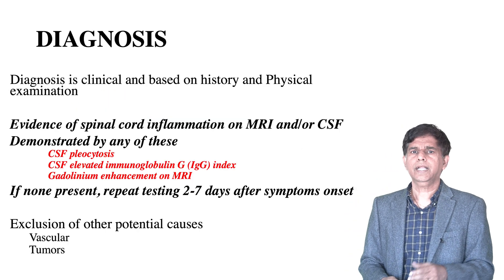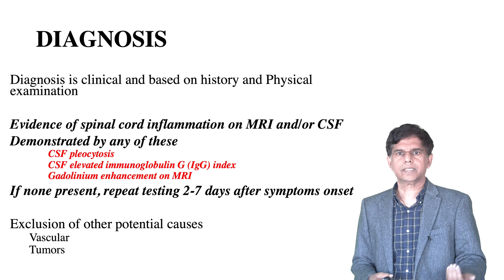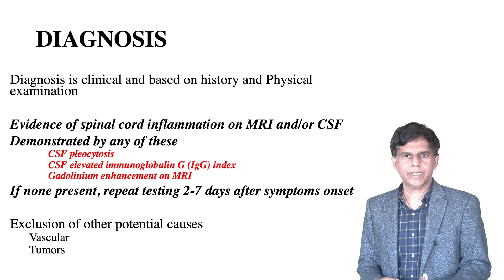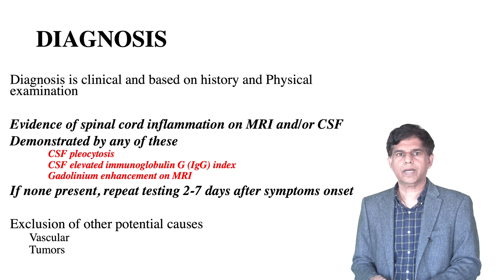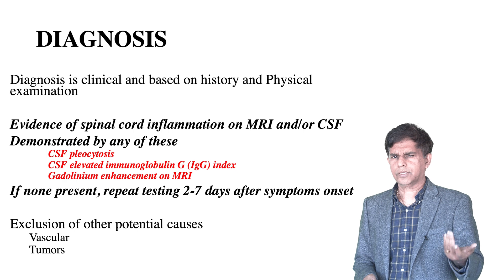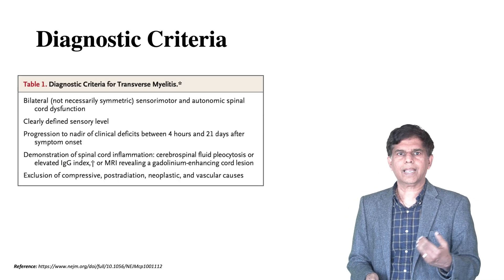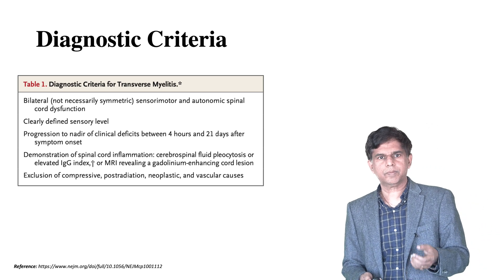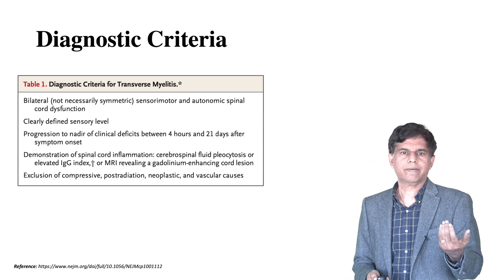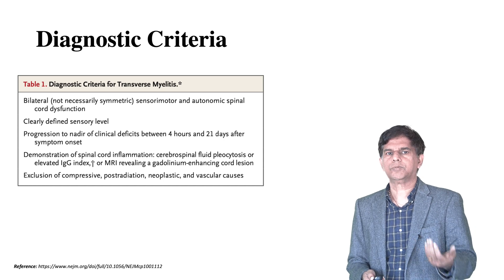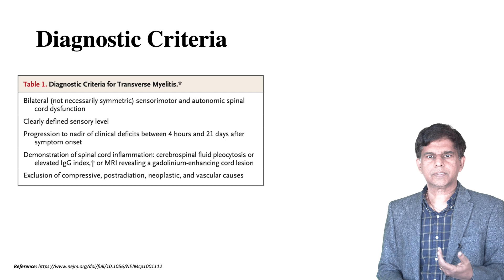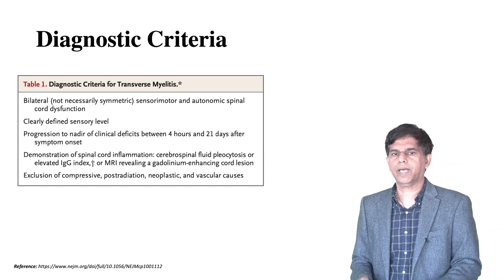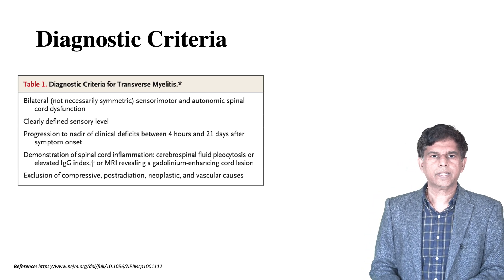Diagnosis is mainly based on clinical and physical examination. CSF pleocytosis, elevated CSF IgG level, and gadolinium enhancement on MRI are key findings. Diagnostic criteria include: bilateral symmetric sensory, motor, and autonomic spinal cord dysfunction; clearly defined sensory level; progression to clinical deficit nadir between four hours and 21 days; demonstration of spinal inflammation via CSF pleocytosis; and exclusion of compressive, post-radiation, neoplastic, and vascular causes.